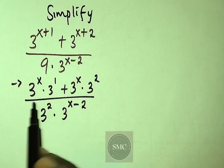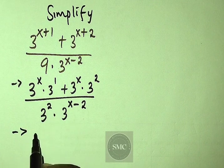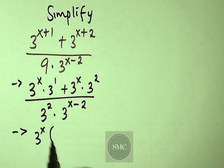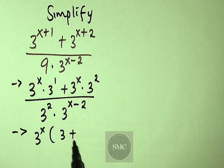From there you can see the numerator has 3 to power x common. I have 3 to power x factored outside, then 3 to power 1 plus 3 to power 2.